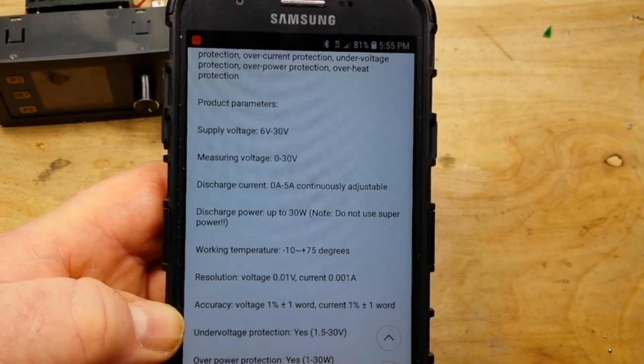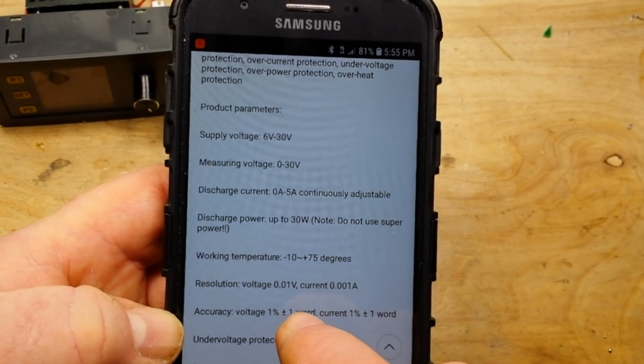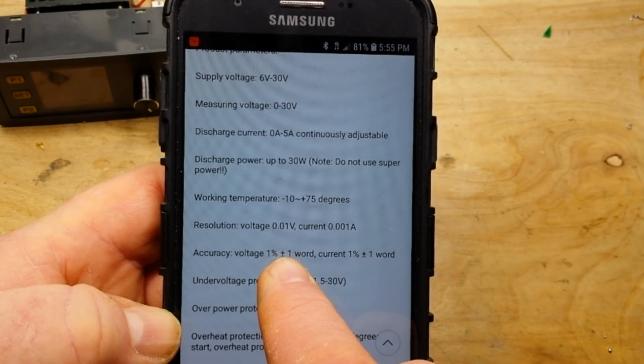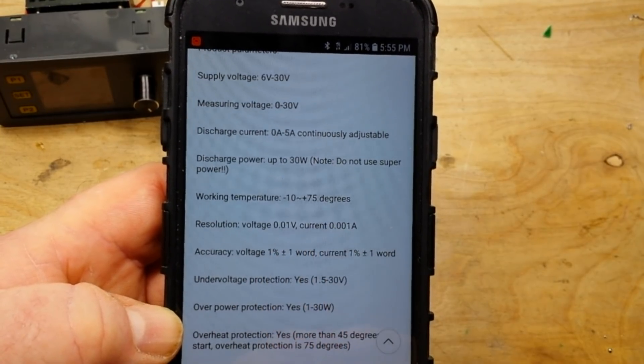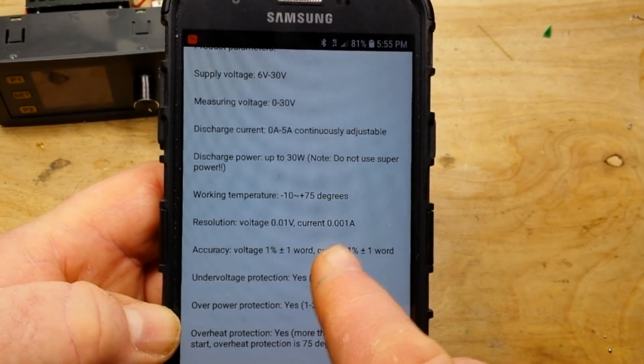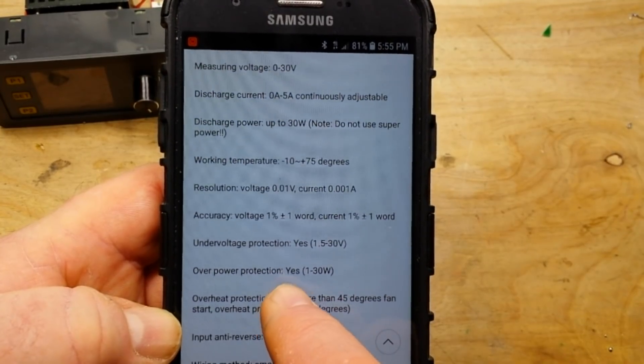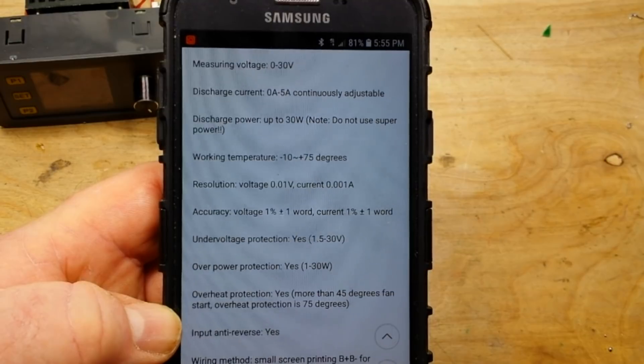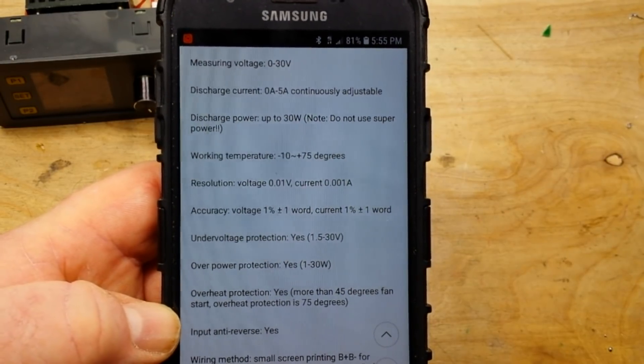Okay, I will not use my x-ray vision on it. Working temperature 10 to 75 degrees. Resolution voltage 0.1 volts at 10 millivolts or 1 milliamp. Accuracy of voltage 1% plus one word. One word means least significant digit, maybe.